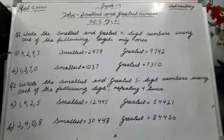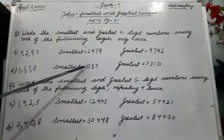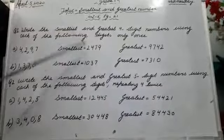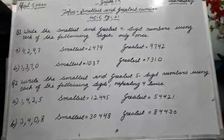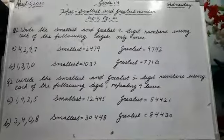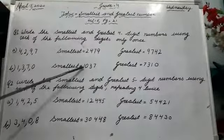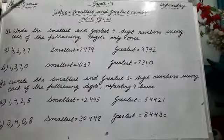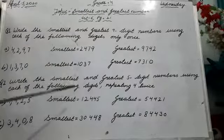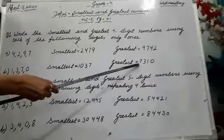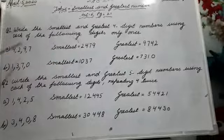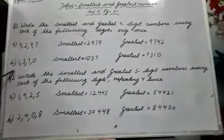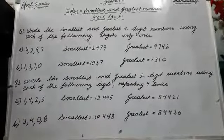Now look at part B — here 0 is also given. You don't write 0 in the first place because 0 doesn't have any value. You write 0 in the second place from the start. In the smallest number, which is smallest? 1. Write 1 first, next write 0 in the second place, then 3, then 7. In the greatest number: 7 first, then 3, then 1, last is 0. Part C you will do yourself.